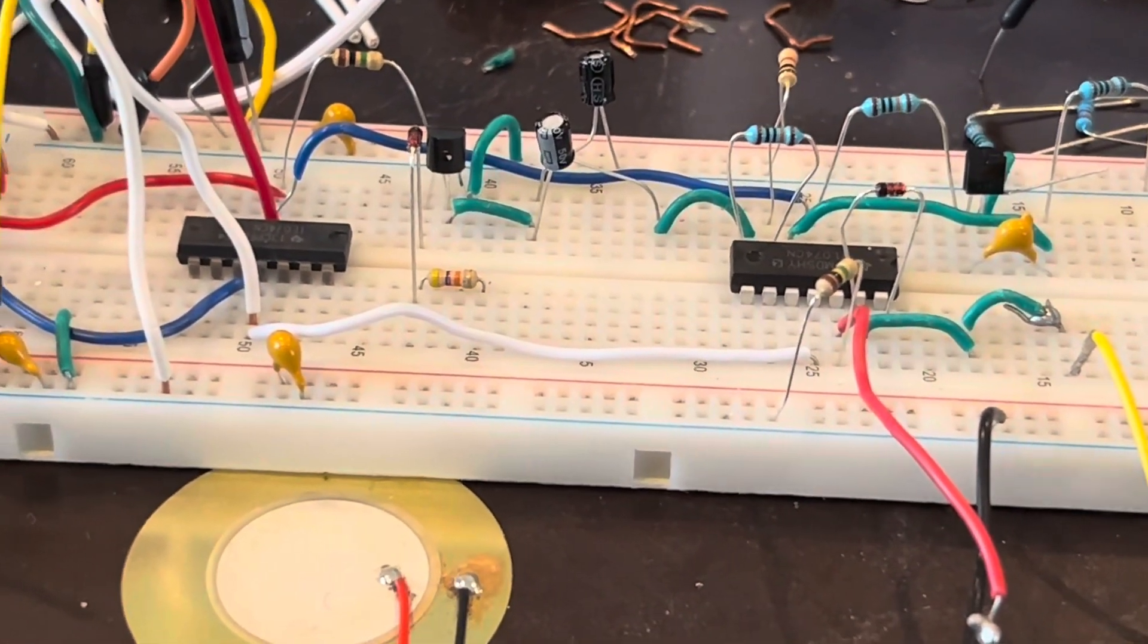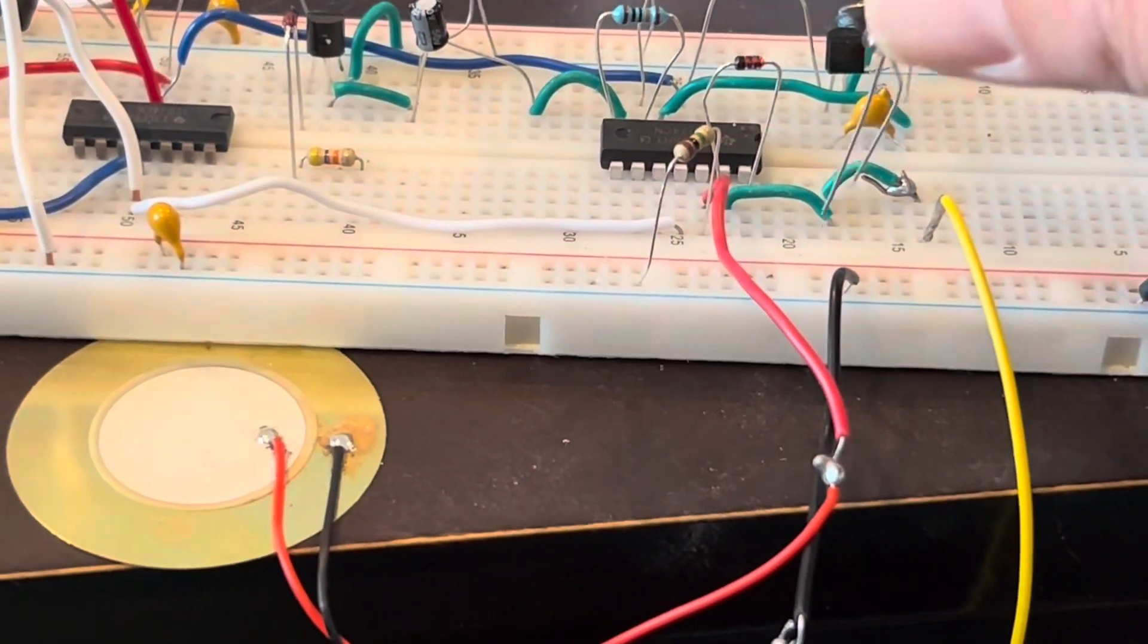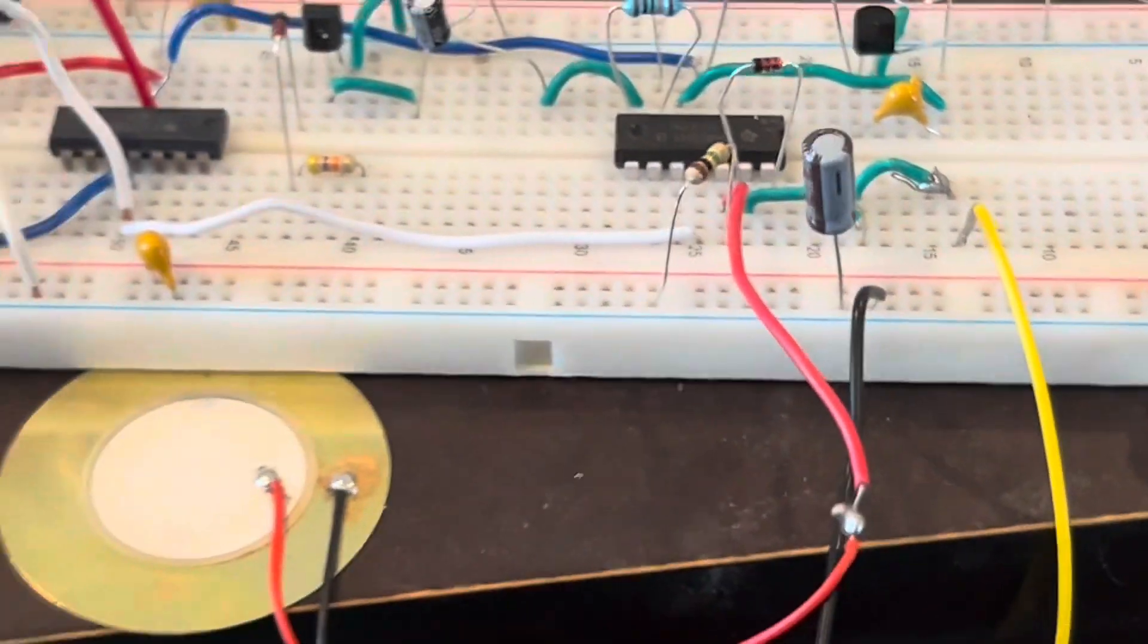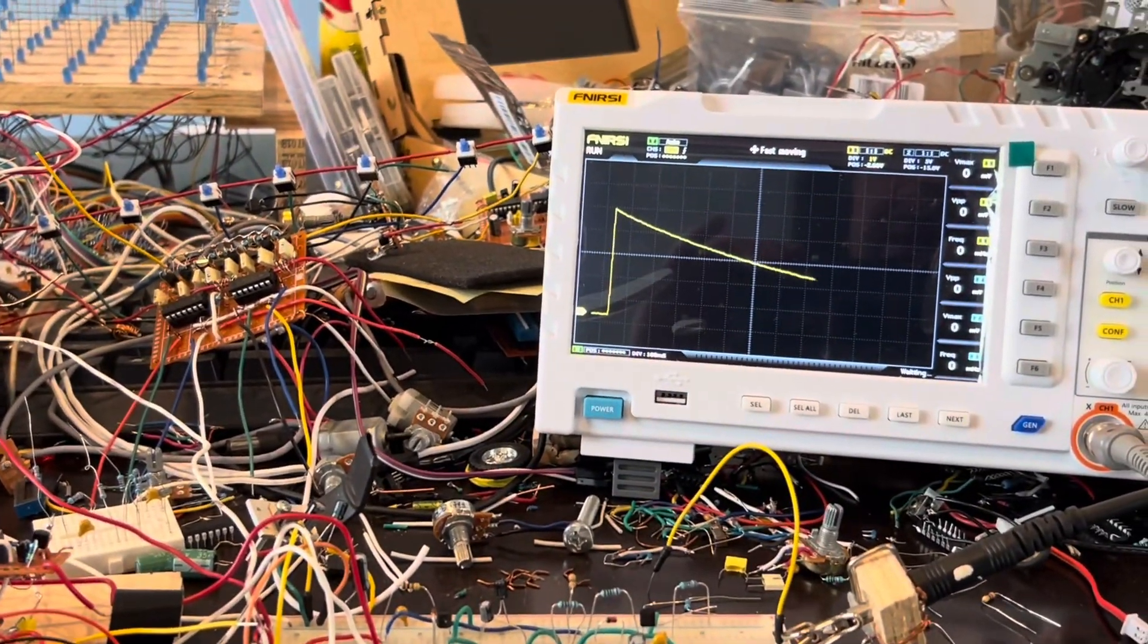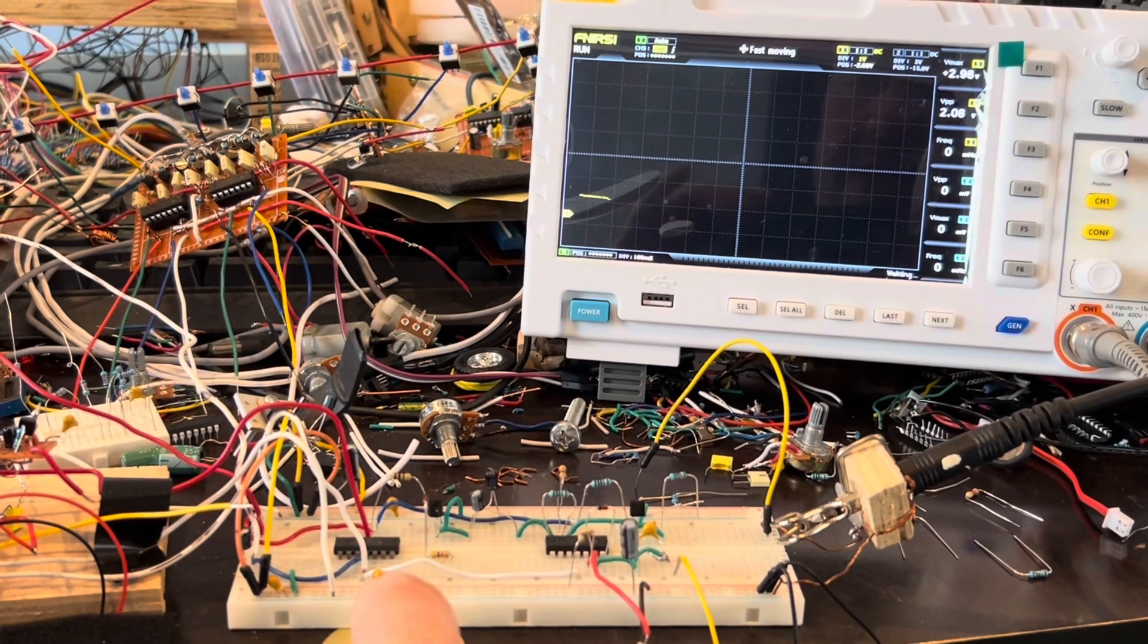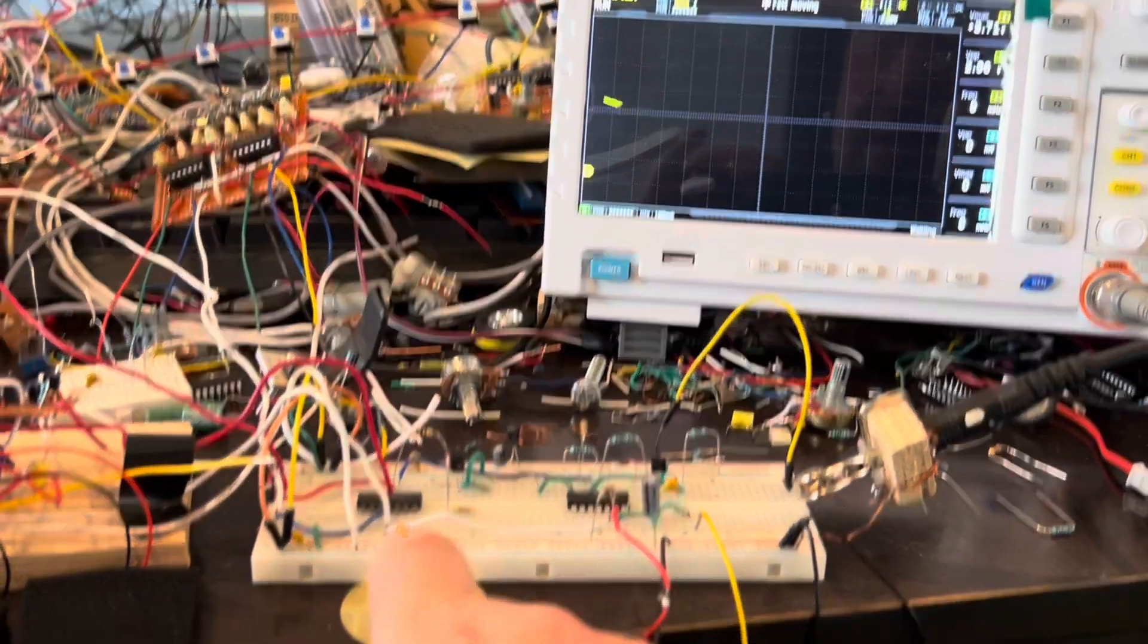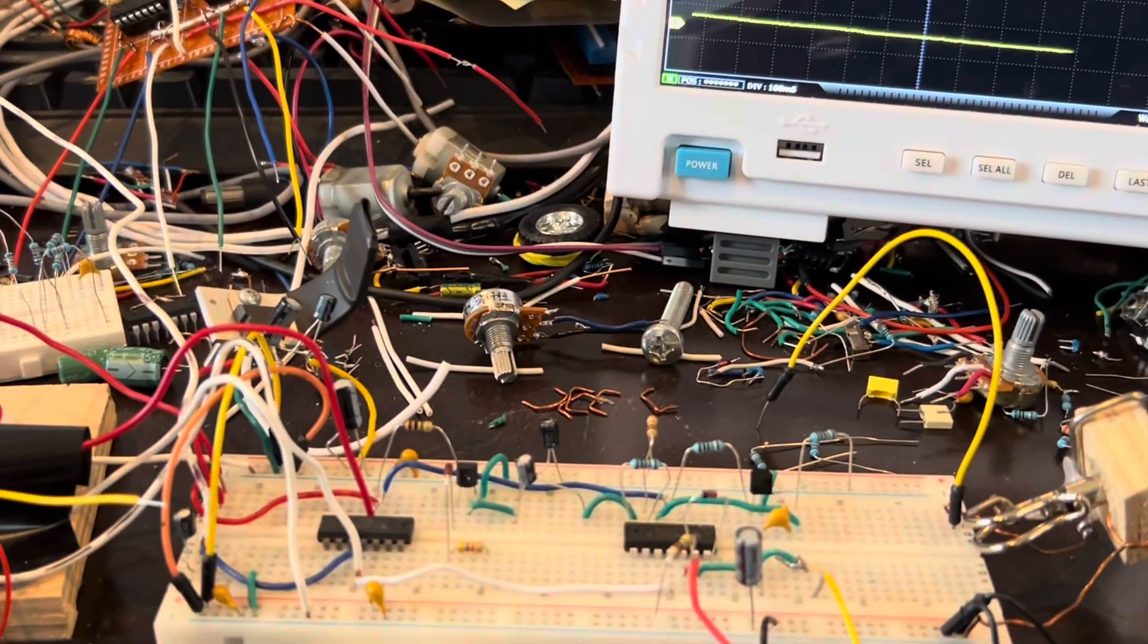So what we're going to do here is we're going to take a one microfarad capacitor. And we're going to put it to ground from this point. And let's see what that looks like. And that is a little too much because it's just a capacitor. And if not for the leaking in the capacitor, basically, that would stay charged. So we don't want that. We want it to decay a little bit.